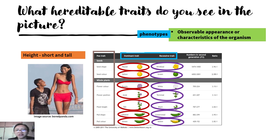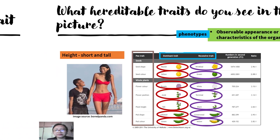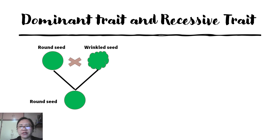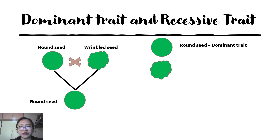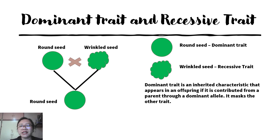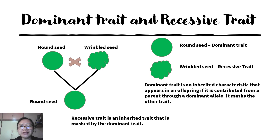Phenotypes can be classified as dominant trait or recessive trait. Let's look at this example: a round seed is pollinated with a wrinkled seed and it gives rise to a plant with a round seed. So in this example, round seed is the dominant trait and wrinkled seed is the recessive trait. Dominant means an inherited characteristic that appears in an offspring contributed from a parent through a dominant allele, and it masks the other trait. Recessive is an inherited trait that is masked by the dominant trait.